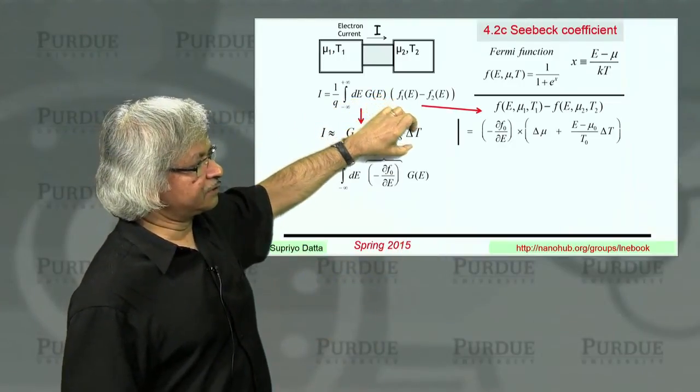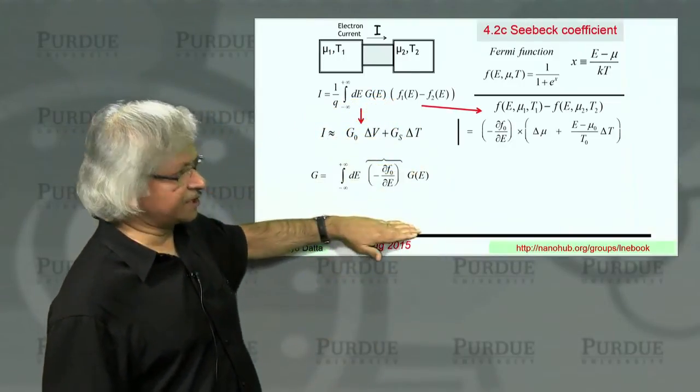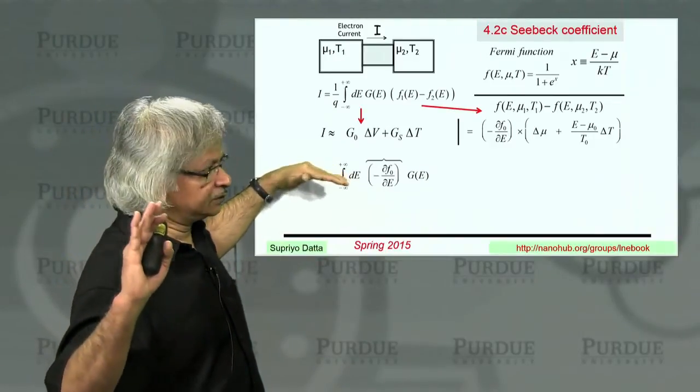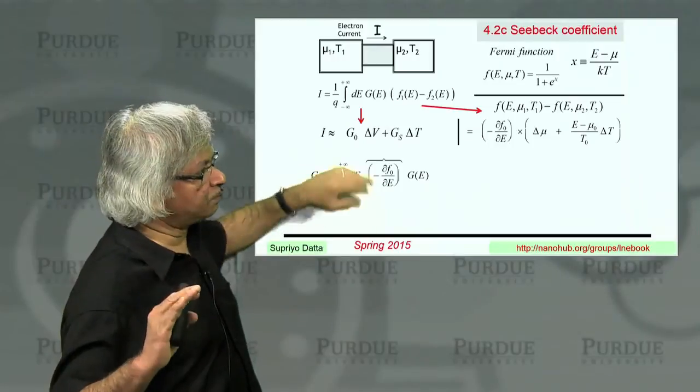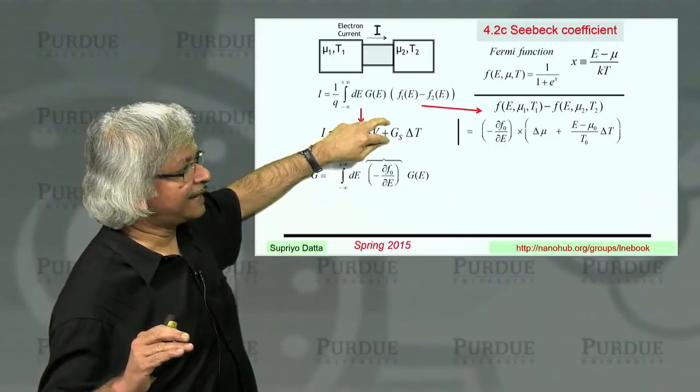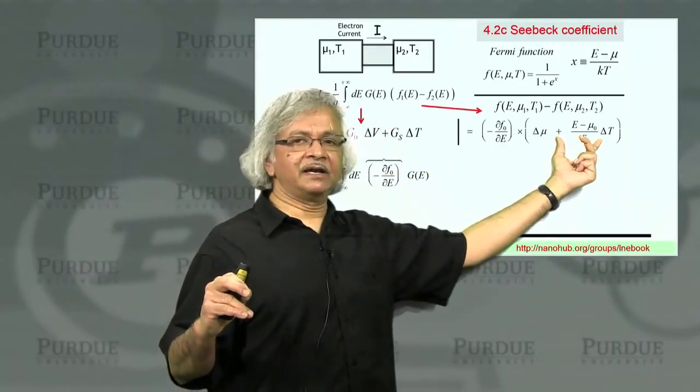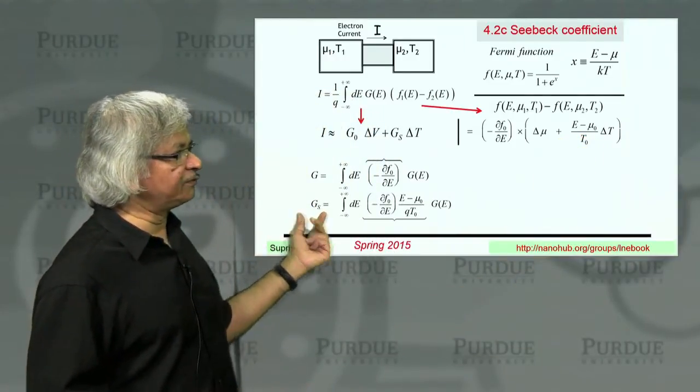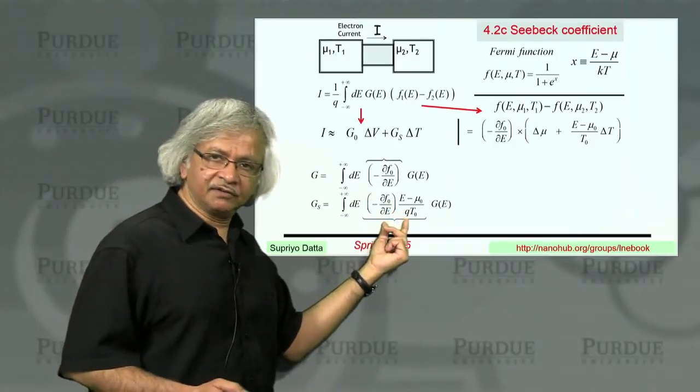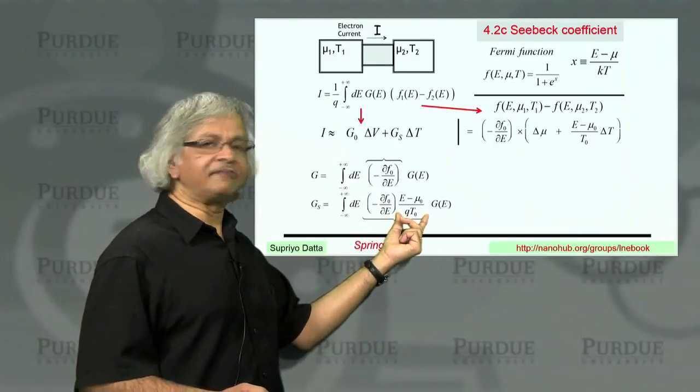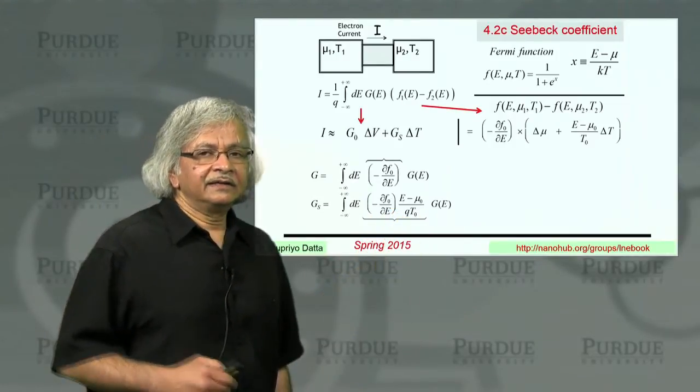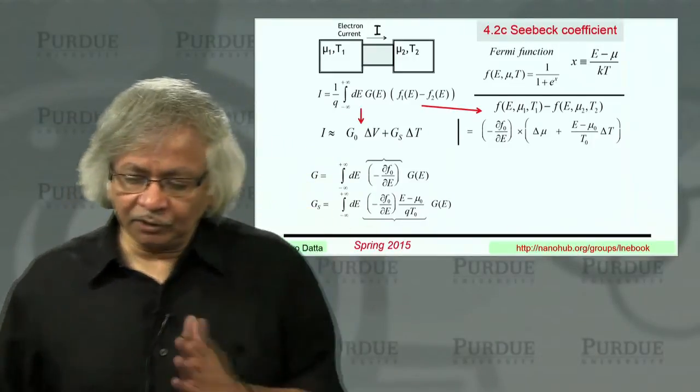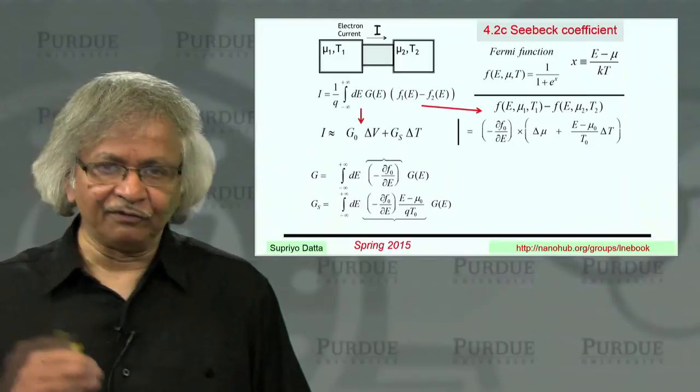Now, for Gs, which is related to the delta T, you get a similar expression. So this is what we had obtained in unit one, not a new result. But what the new part is the second term. And that has this extra E minus mu over T in it. So the expression for the Seebeck coefficient involves this derivative of the Fermi function times that factor. And these expressions, mathematically capture what we had discussed physically in the first slide.